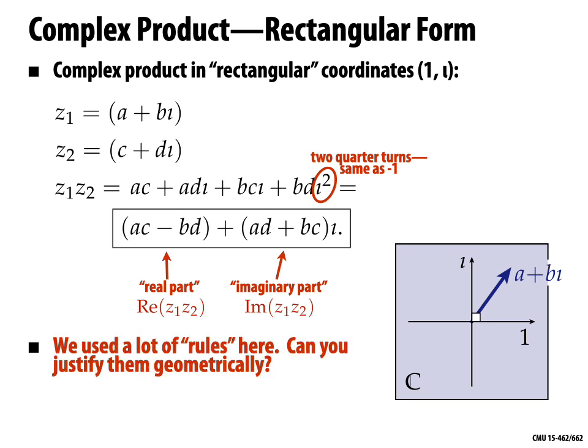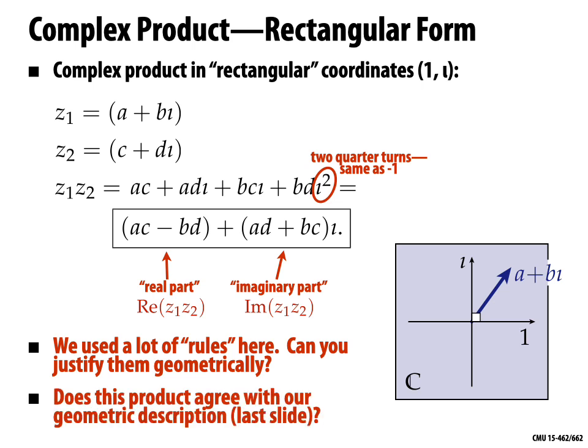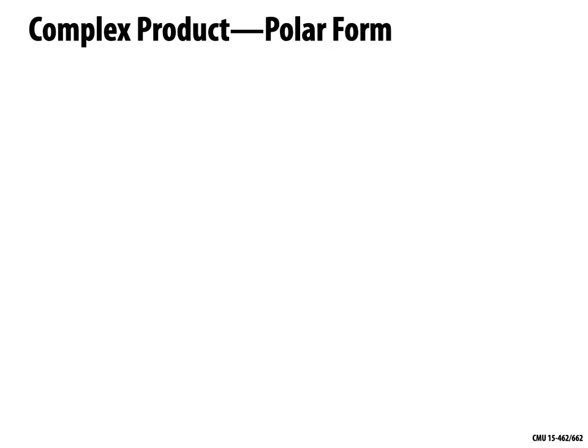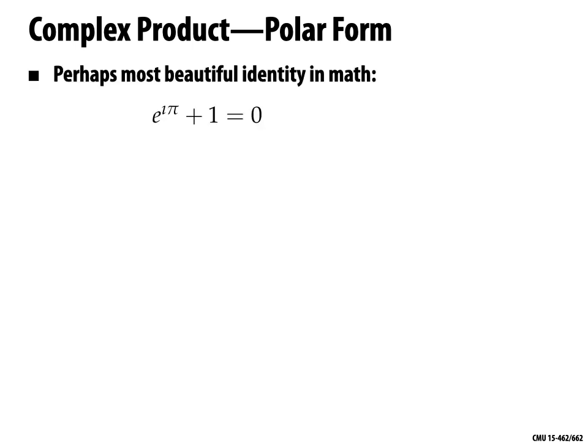We used a lot of little rules — can we justify this geometrically? Perhaps the most beautiful identity in math is e^(iπ) + 1 = 0. Why do people think this identity is so nice? It involves a bunch of fundamental constants — e, π, i, 1, 0 — and nothing else, relating them all in one unified equation.